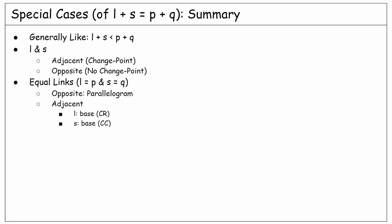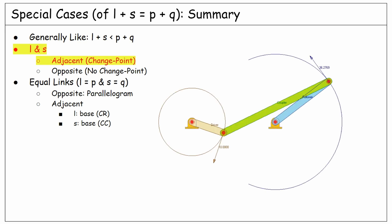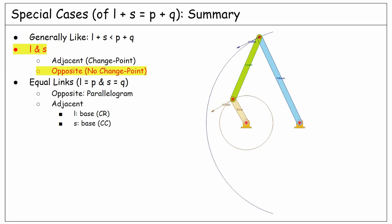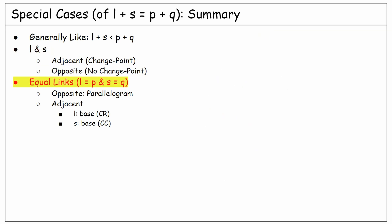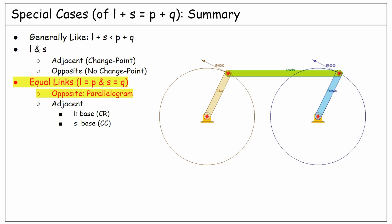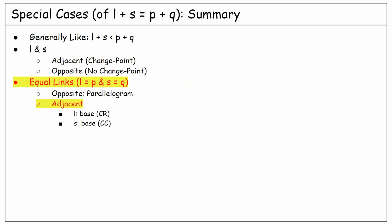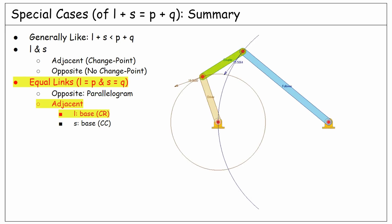As a quick summary, in general, the case of equal L plus S and P plus Q is similar to the case of less than, but there are some special situations. If the longest and shortest links are adjacent, the change point situation will happen. But if they are opposite, no change point might happen. If each of the longest and shortest is equal to one of the other two links, then if the equal links are opposite, we might have a crank-crank linkage known as a parallelogram, which might get affected by a change point. If the equal links are adjacent, we should look at the base link. If the longest is the base, we have a crank-rocker motion. And if the shortest link is the base, then we have a crank-crank motion.